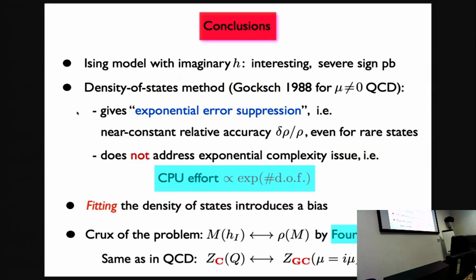As a final remark, Biagio also mentioned, this is a Fourier transform going from the density of state to the magnetization. This is, of course, very similar to QCD, where the canonical and grand canonical partition functions are related by Fourier transform in the imaginary chemical potential. Thank you very much.